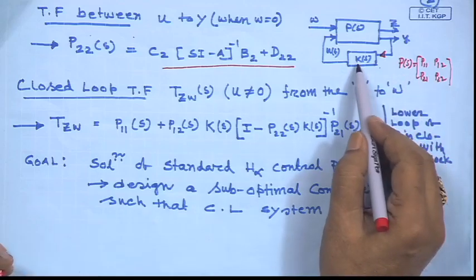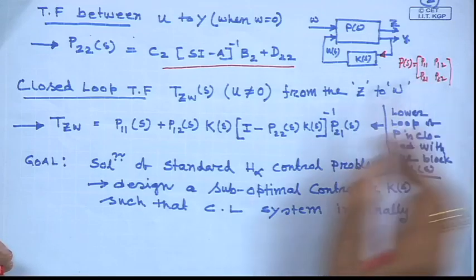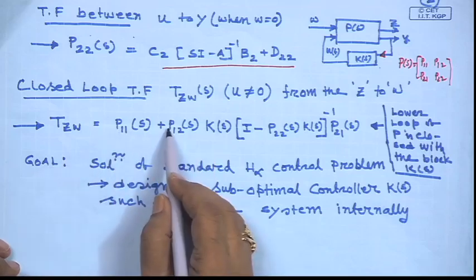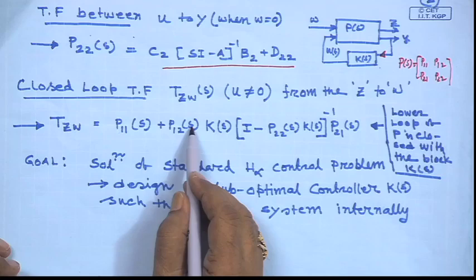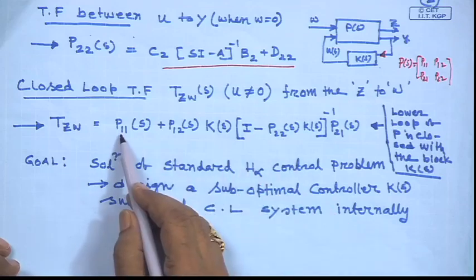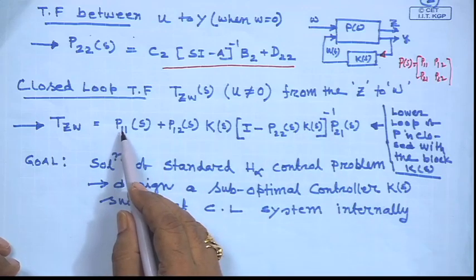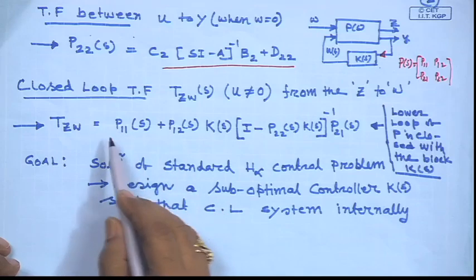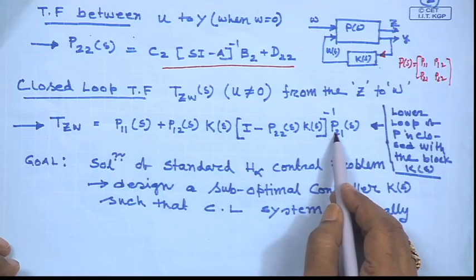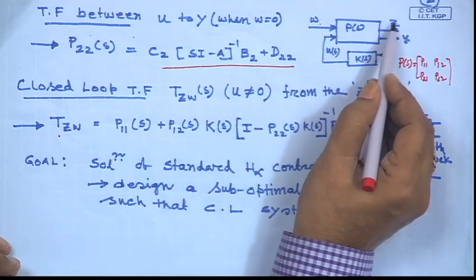If you want to find out the transformation between w to z when the lower loop of P is closed with the block K(s), this is the lower linear fractional transformation. Starting with upper block matrices P11 and using lower block P22, you get: P11(s) + P12(s)·K(s)·[I − P22(s)·K(s)]⁻¹·P21(s). This gives the closed-loop transfer from w to z.